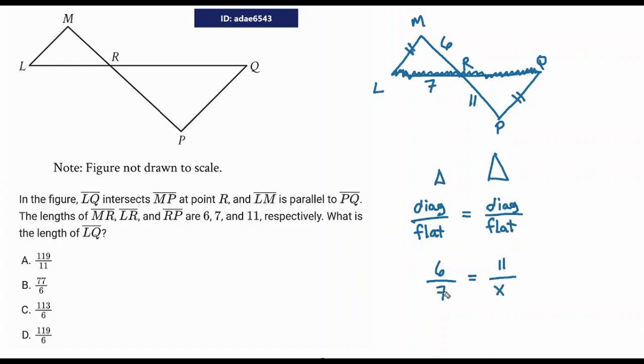So once you set it up, it's just cross-multiplying. So that's just 6x equals 77. Obviously, you're going to divide both sides by 6. Oh man, you get this nasty fraction, 77 over 6. Okay, so this whole line is what? It's 7 plus 77 over 6.